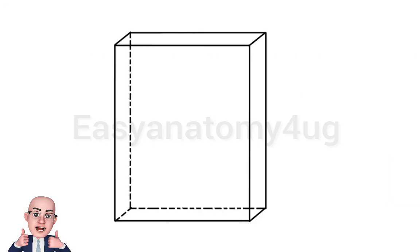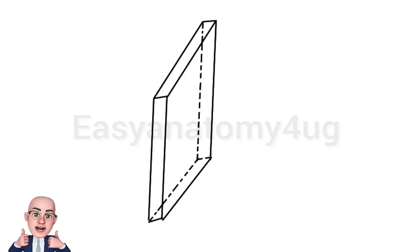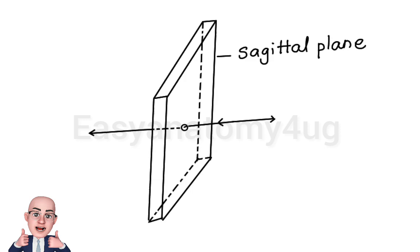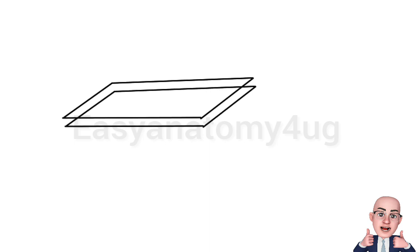As shown in the diagram, this is a coronal plane and the antero-posterior axis which is perpendicular to it. Next, we have the sagittal plane and we can see the transverse axis which is perpendicular to it. Then we have the transverse plane and the vertical axis which is perpendicular to it.